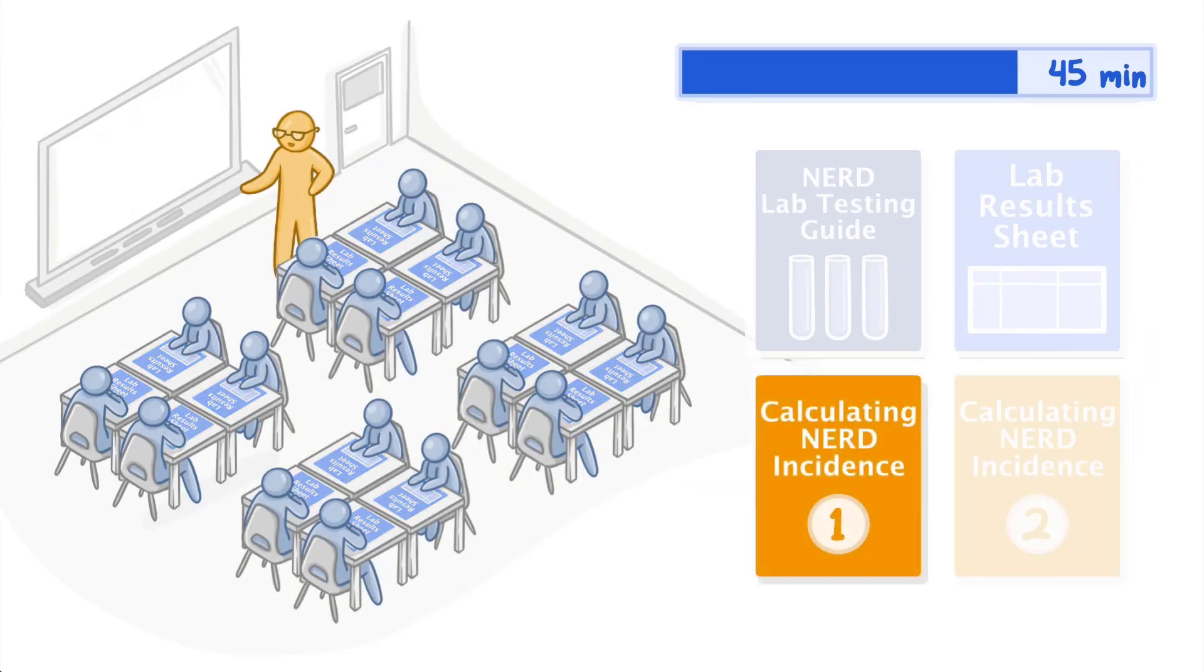Hand out a Calculating NERD Incidents Part 1 sheet to each student. Read the overview together. Have students calculate the incidence data during the outbreak for the whole university, off-campus students, and on-campus students. Discuss answers.